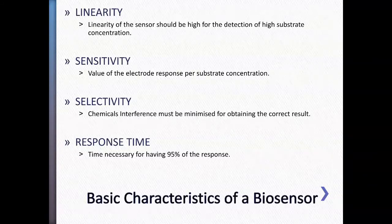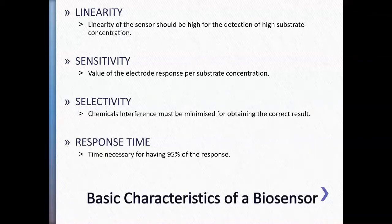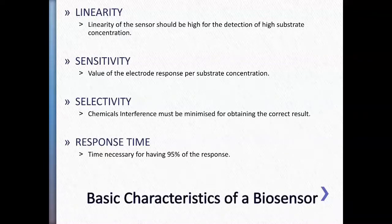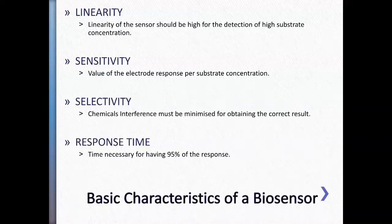What are the basic characteristics of a biosensor? There are four basic parameters to consider. First is linearity — the linearity of the sensor should be high for detection of a high substrate concentration. If you have high signals, the magnitude of those signals should also be detected by your system. Even at low concentrations, the sensor can still detect the analyte and indicate it's a low concentration. Linearity allows you to calculate the concentration of the analyte you are sensing.